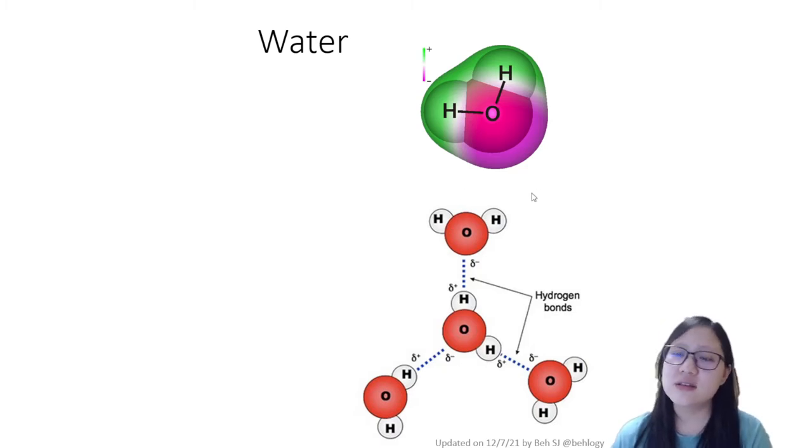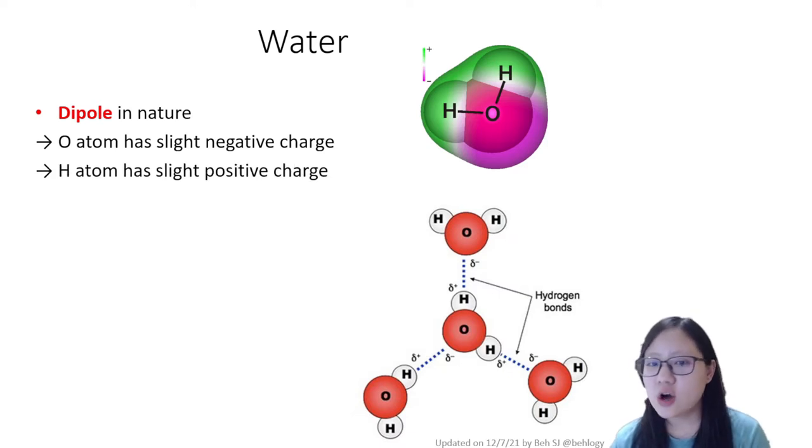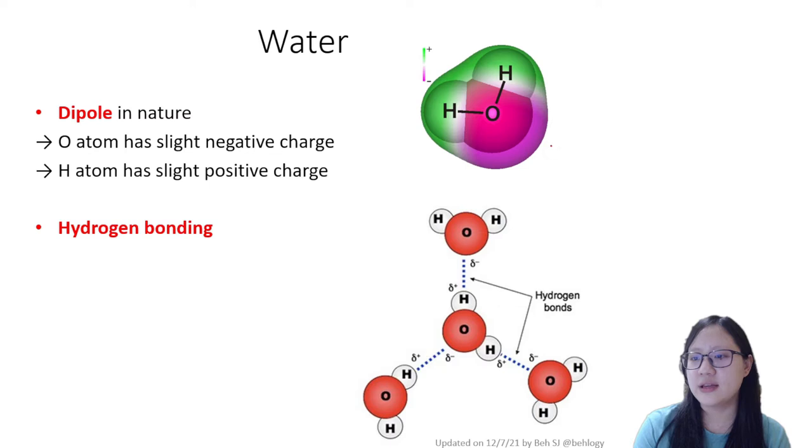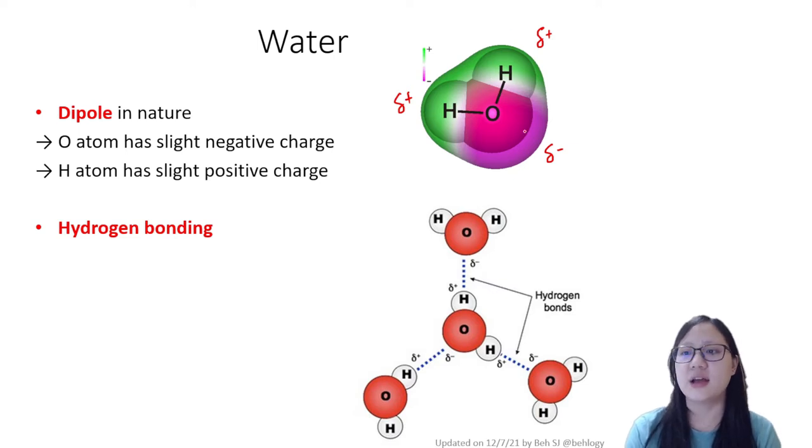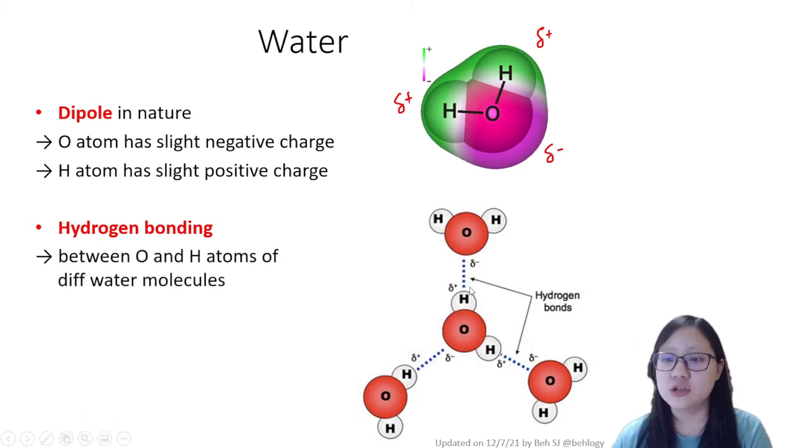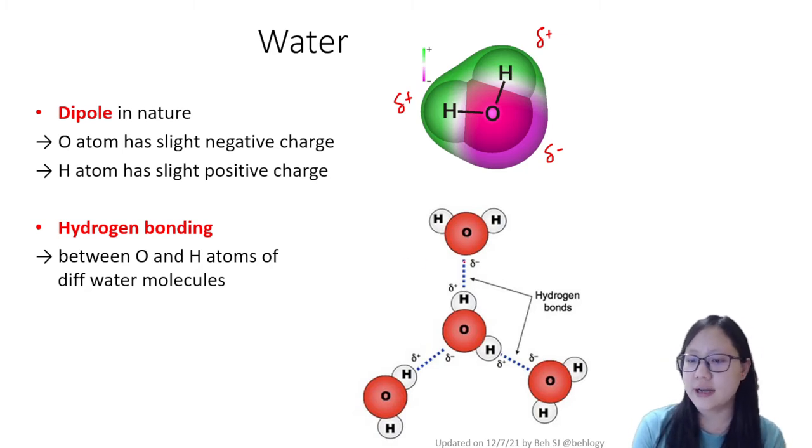Water is considered as dipole in nature. The oxygen has a slight negative charge and the H atom has a slight positive charge. This is because of the unequal distribution of electrons inside the molecule - the electrons tend to gravitate towards the oxygen. Because of this dipole nature, this allows the formation of hydrogen bonds between the oxygen and hydrogen of different molecules. We draw them with this dotted line - hydrogen slightly positive attracted to oxygen which is slightly negative.